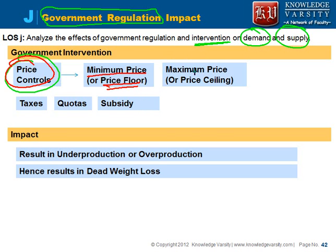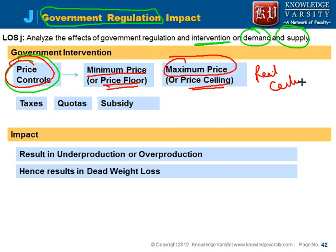Sometimes governments control prices by setting maximum prices on certain items. These are your price ceilings. In certain cities of the world, you have rent ceilings — the rent will not be more than a few thousand dollars or some hundred dollars. This acts as a deterrent to many of the suppliers. We will see what is the impact of this price control.